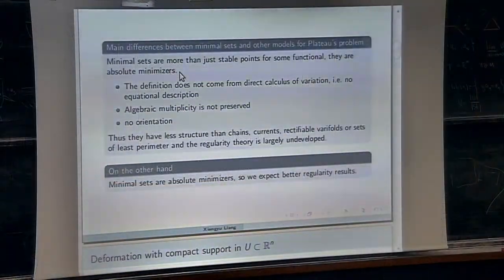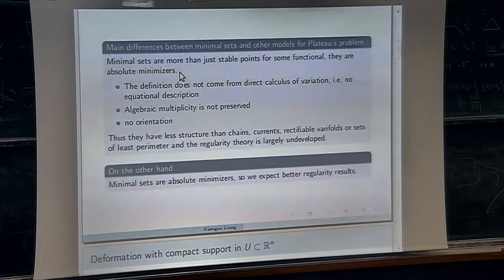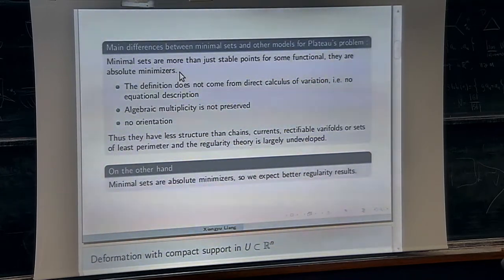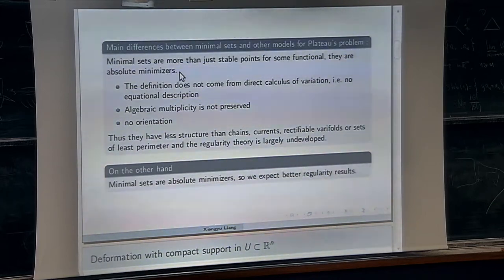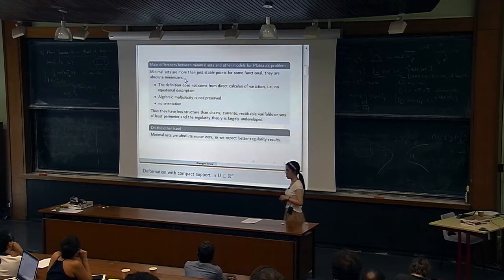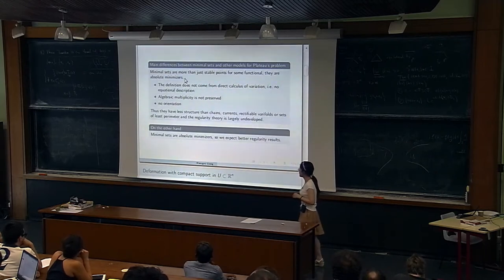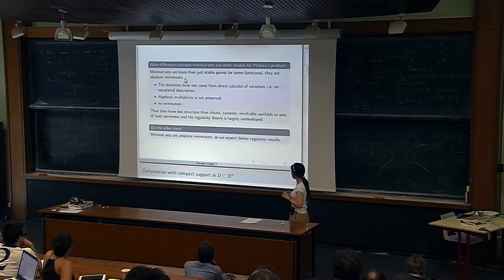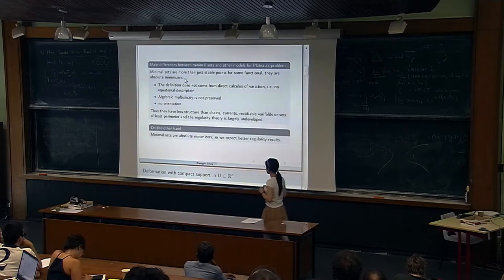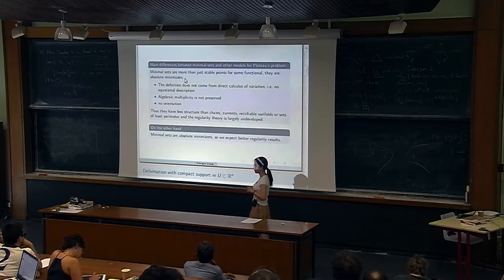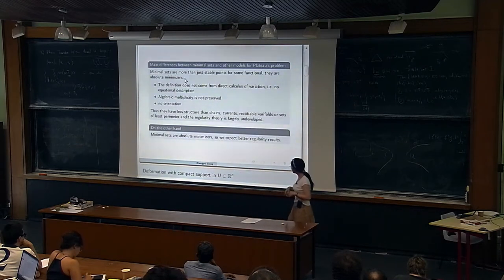Some main differences between minimal sets and other models for Plateau's problem: minimal sets are absolute minimizers for some functional, unlike minimal surfaces or stationary varifolds where you only compute the first variation. The definition does not come from direct calculus of variations, so there is no equation or description. Algebraic multiplicity is not preserved, and there is no orientation. They have less structure than chains, currents, and rectifiable varifold sets. While the regularity theory is largely undeveloped for minimal sets, they are absolute minimizers, so we expect better regularity results than other models.